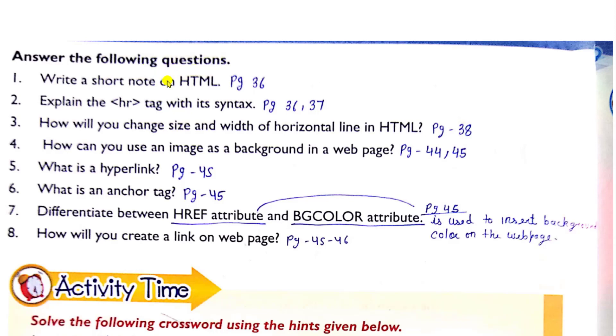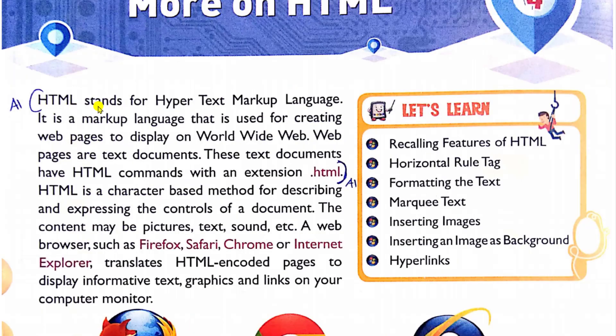Now we are starting with question answers. Answer the following. Total eight questions are there. So question first is write a short note on HTML. So if you have book, you can get it on page number 36. This is your answer. HTML stands for hypertext markup language. It is a markup language that is used for creating web pages to display on worldwide web. Web pages are text documents. For instance, these text documents have HTML commands with an extension .html. This is your answer.